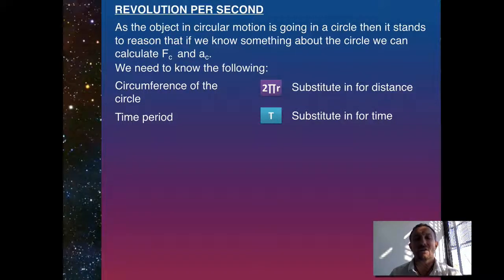We also know that we've got the time period. Now, the time period is the time for an object to make one complete revolution, or do 2 pi R of the circle. So we can now substitute that into velocity. We know that velocity is distance over time. So in this case, the distance is going to be our circular distance, which is 2 pi R, and the time is going to be the time period, the time to actually travel one complete circle.